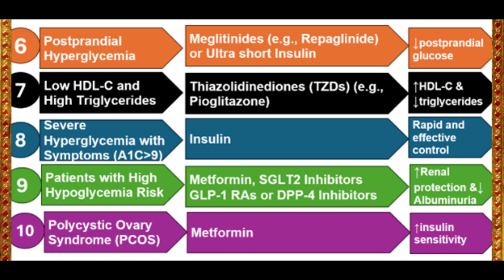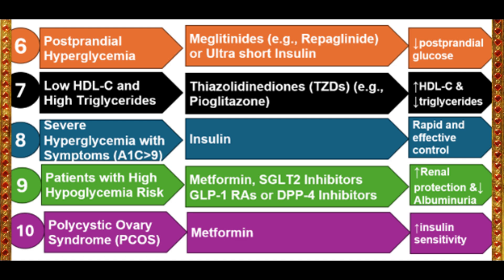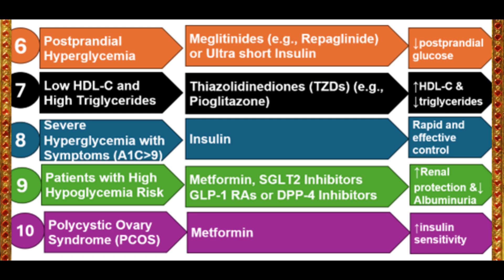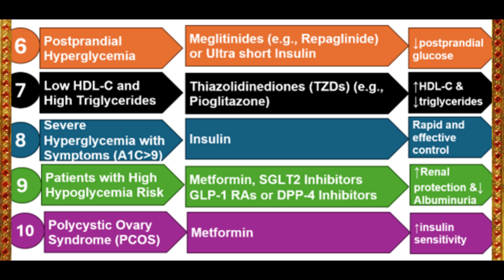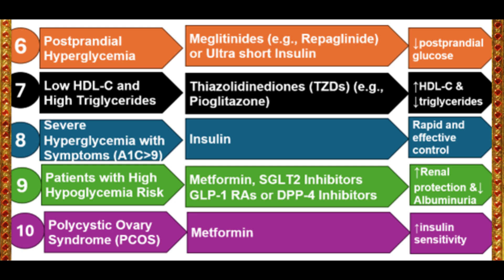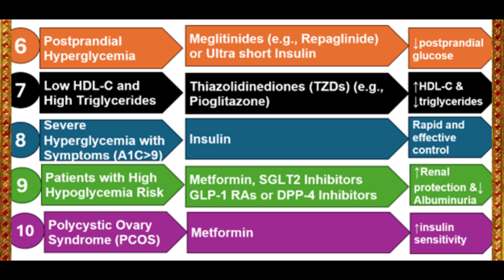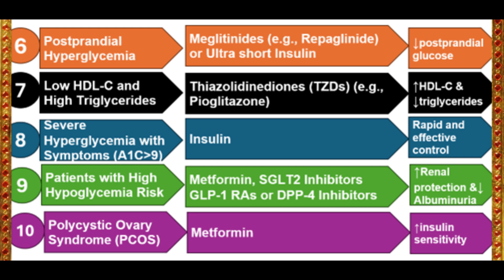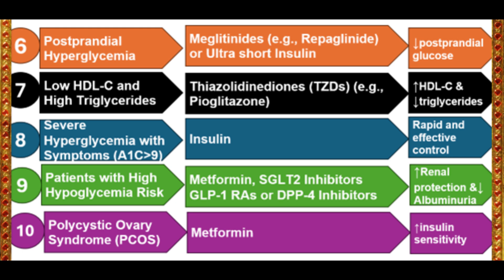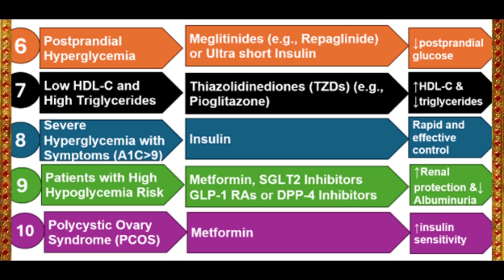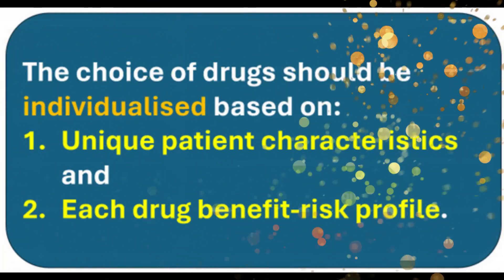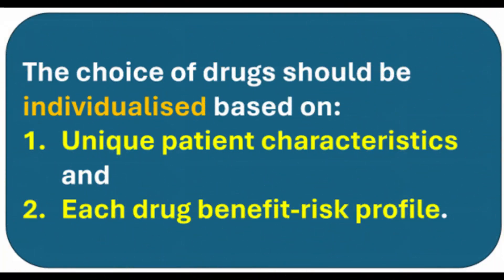Case 10 – Polycystic Ovary Syndrome. For PCOS, metformin is the preferred drug. It improves insulin sensitivity, enhances ovulation rates, and supports weight management.